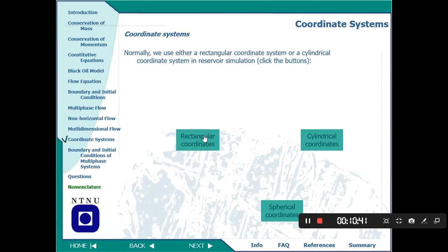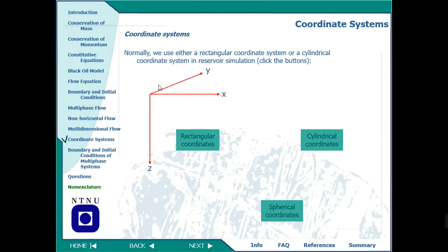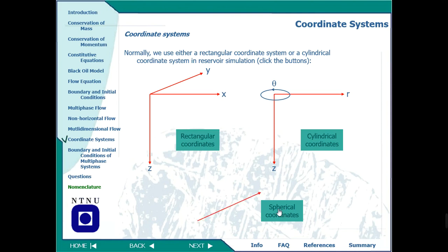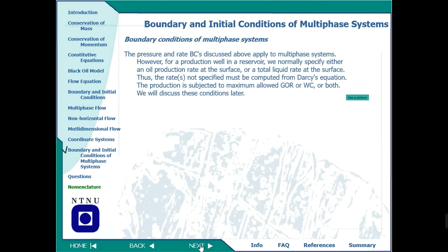Now we talk about coordinate systems used in reservoir simulation software. The most common are rectangular coordinates with x, y, and z, and cylindrical coordinates with r, theta, and z used for cylindrical reservoirs. There are also spherical coordinates, but the rectangular and cylindrical systems are the most widely used. Cylindrical coordinates are particularly useful for issues like water coning.